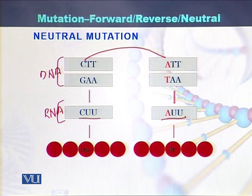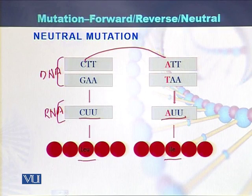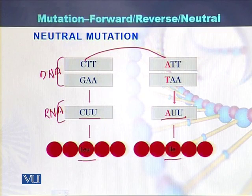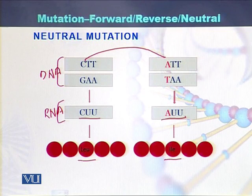CUU is the codon for amino acid leucine, while AUU is the codon for isoleucine. We see that in the original sequence of the amino acids there was leucine, while as a result of the change in DNA sequence, instead of leucine, there is now isoleucine. But the function of the protein remains the same after the change of the amino acid. So if there is a change in the amino acid sequence and the function of the protein remains the same, such a mutation is called neutral mutation.